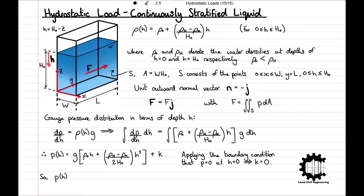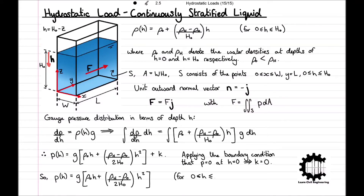Applying the boundary condition (p = 0 at h = 0, since the surface is open to atmosphere), the constant k = 0, so the pressure distribution is: p(h) = g × [rho_0·h + (rho_h − rho_0)/(2h_0) × h²], valid from h = 0 to h = h_0.